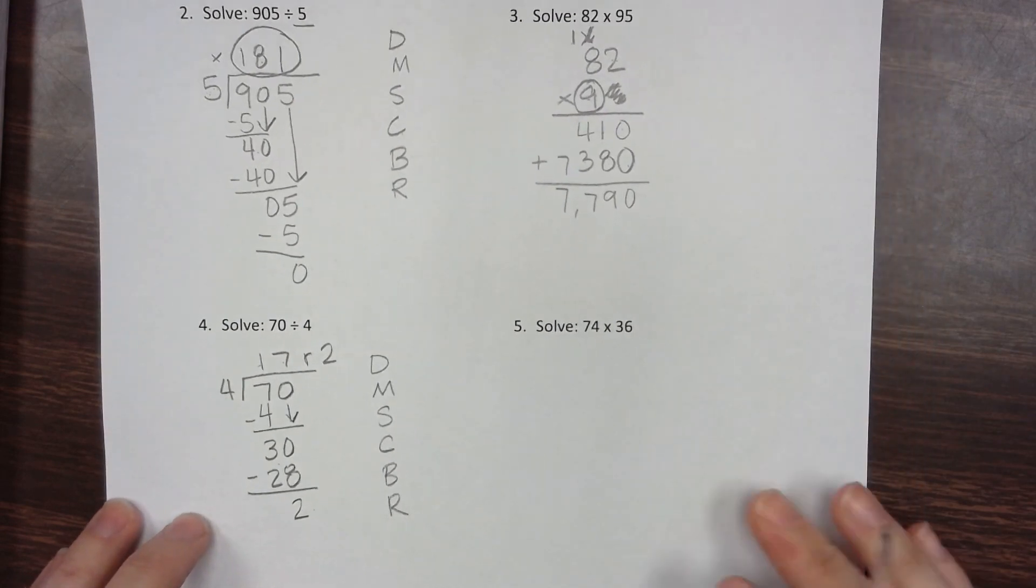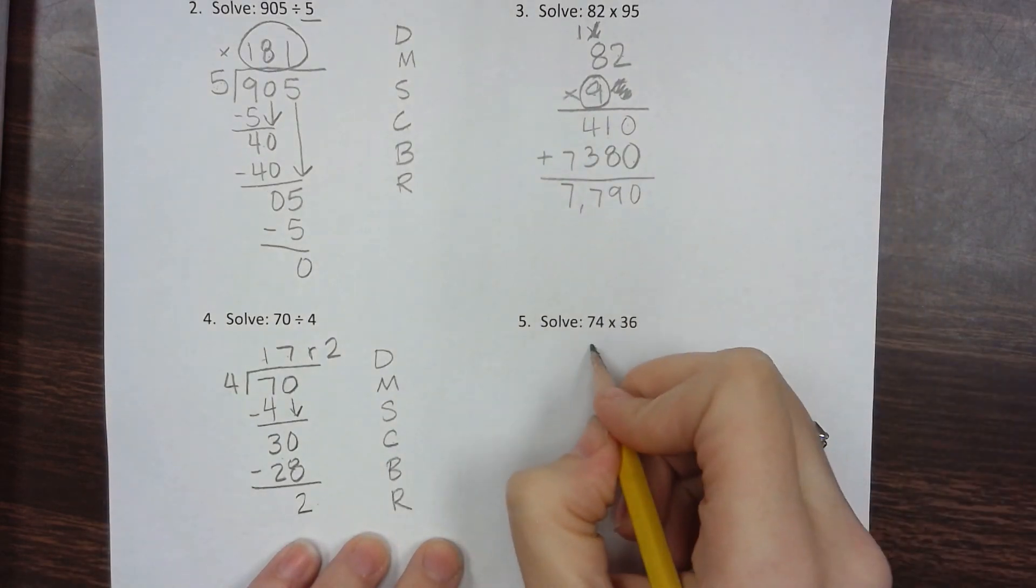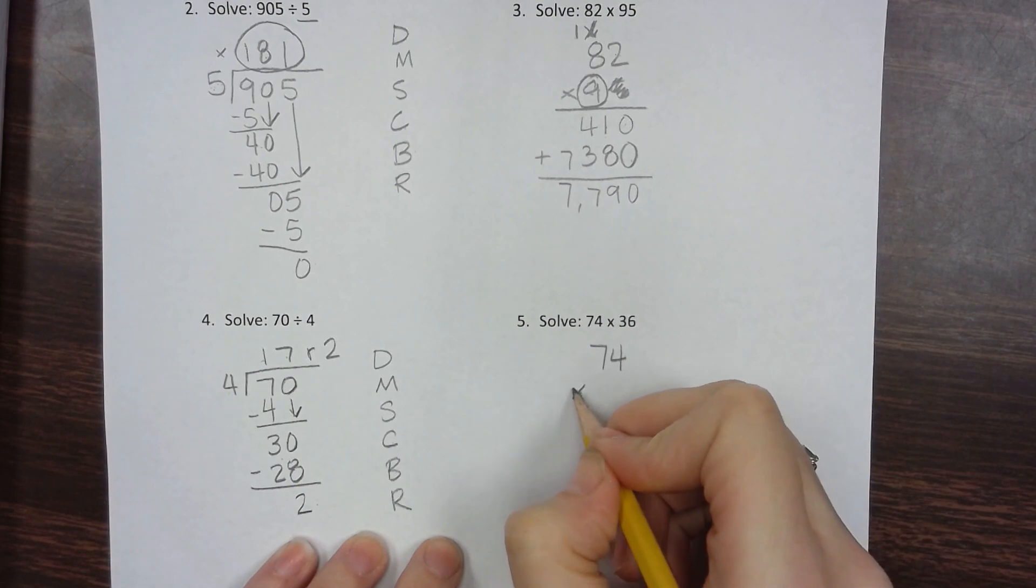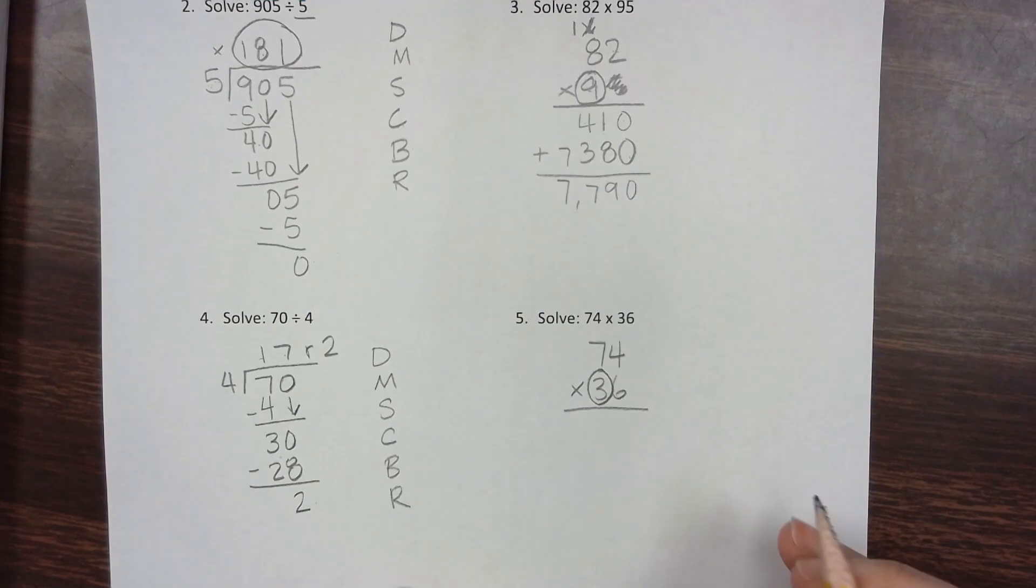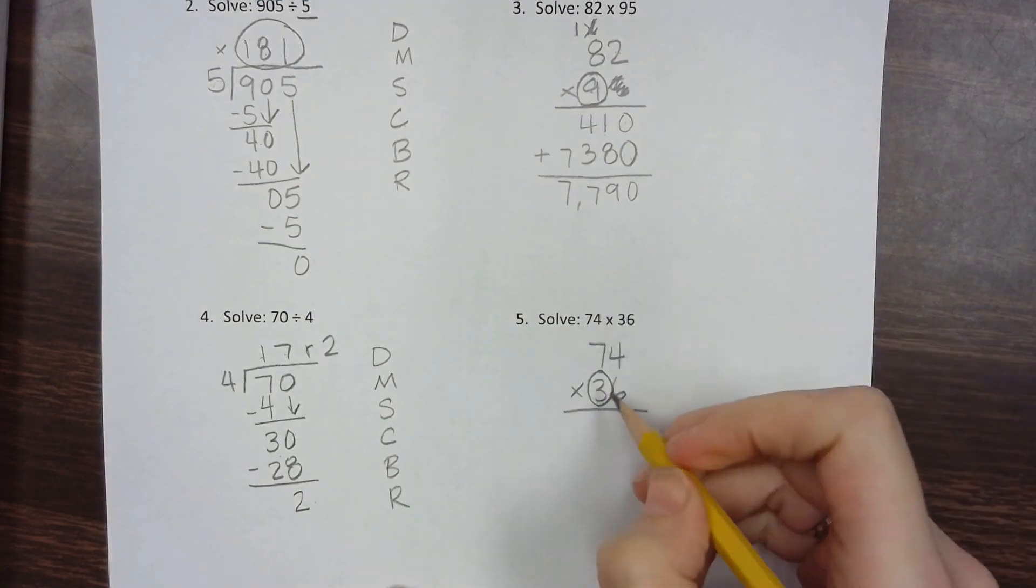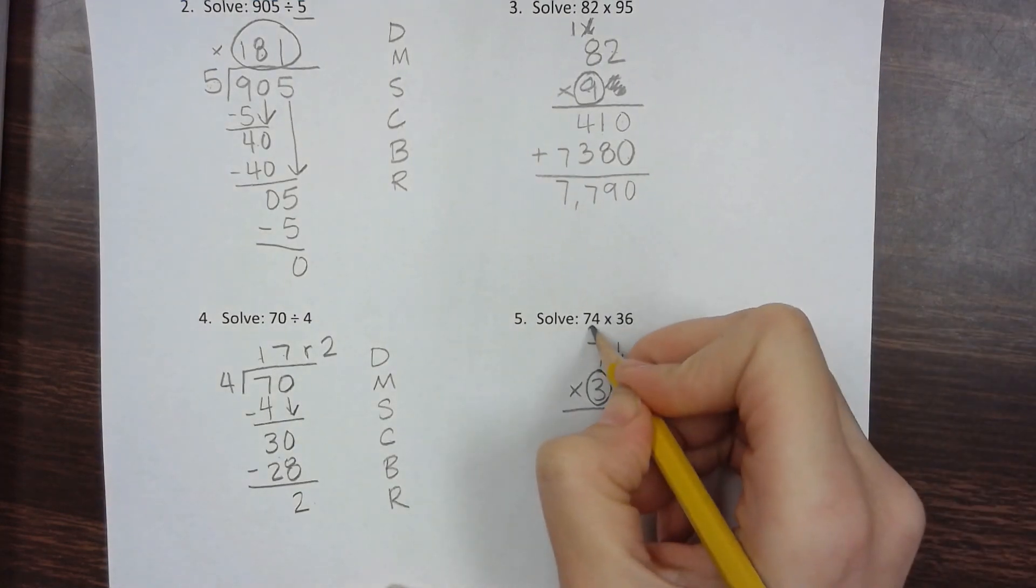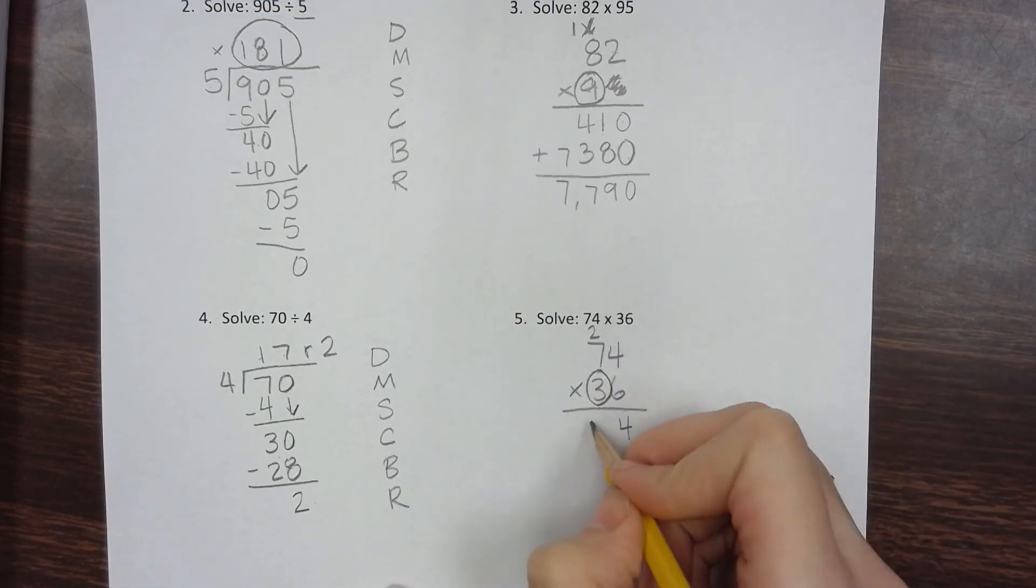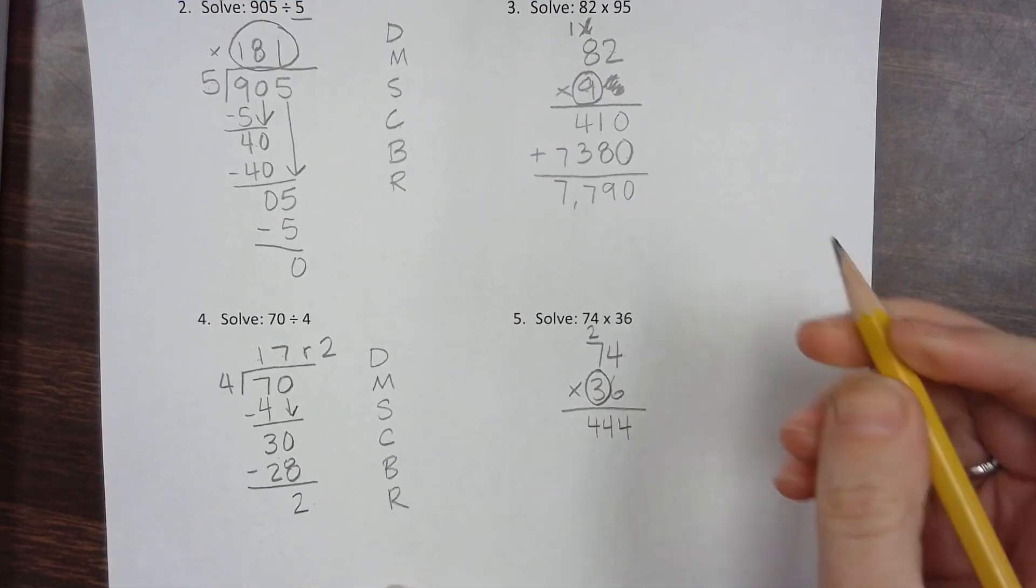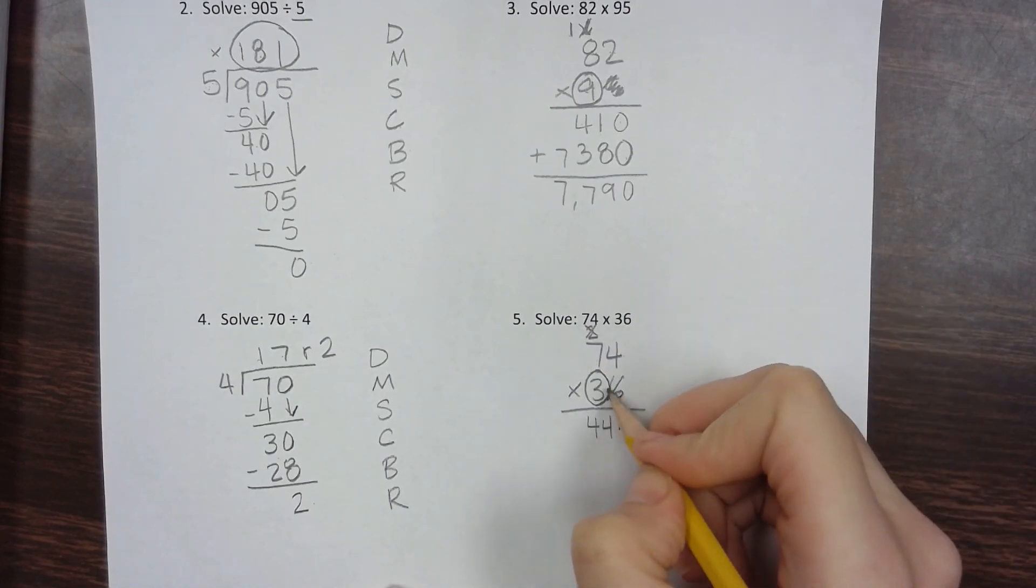Last problem: 74 times 36. Stack them and circle the tens digit. Let's begin: 6 times 4 is 24, carry the 2. 6 times 7 is 42, plus 2 is 44. Now housekeeping.